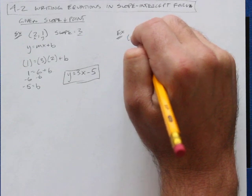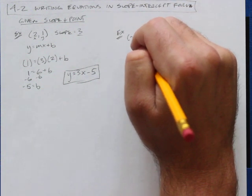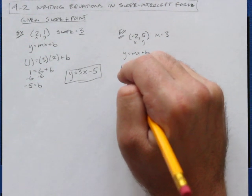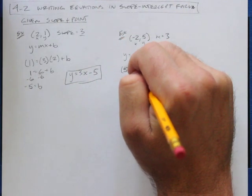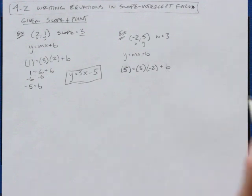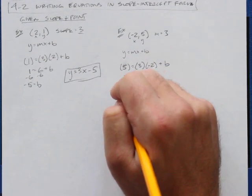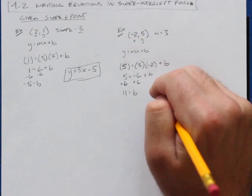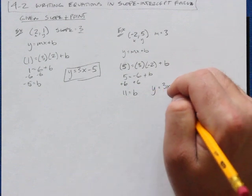Let's do another example. I've got a point (-2, 5) and a slope of 3. The first thing I'm going to do is label x and y, then write down my equation, mx plus b, just to remember where everything goes. Plug in 5 for y, plug in 3 for my slope which is m, and plug in negative 2 for x. I don't know my y-intercept yet, so I just put plus b at the end. Now 5 equals 3 times negative 2 is negative 6 plus b. Add 6 to each side to get b by itself, and I get 11 equals b. So y equals 3x plus 11.